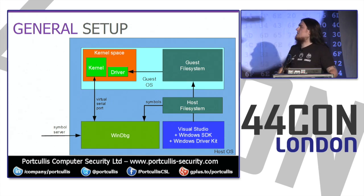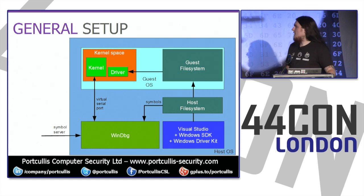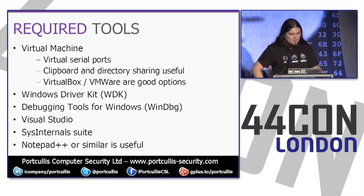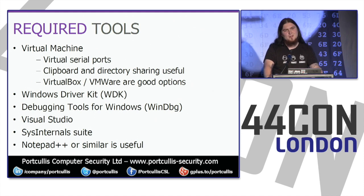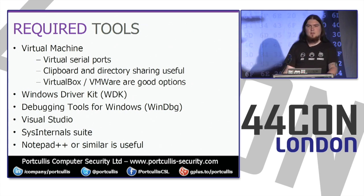You've obviously got your driver running alongside the kernel in kernel space on the guest OS, and you'll use something like a virtual serial port so that WinDbg can do kernel debugging. The required tools include a virtual machine that supports virtual serial ports, clipboard and directory sharing — which is immensely useful — and VirtualBox and VMware both work. You want the Windows Driver Kit, debugging tools for Windows, which is essentially WinDbg.